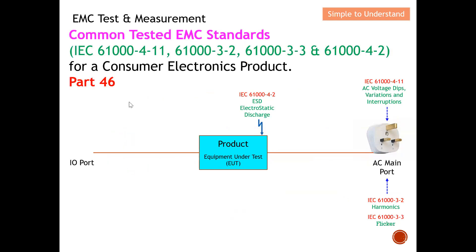In the Part 46 series discussion, I kicked off the tests that need to be executed at the AC main port. Under this AC main port, there are three tests: IEC 6100-4-11 for AC voltage dip, variation, and interrupts; IEC 6100-3-2 for harmonics; and IEC 6100-3-3 for flicker.